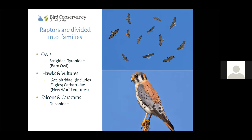The four orders are: the Accipitriformes — your hawks and eagles; the Strigiformes — your owls; the Cathartiformes — your New World vultures; and the Falconiformes — your falcons and caracaras. Within the hawks and vultures, the Accipitridae family also includes our eagles, so keep that in mind.